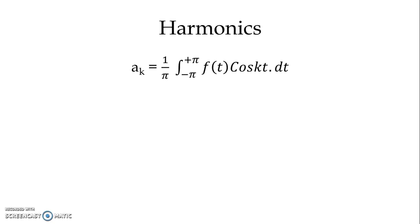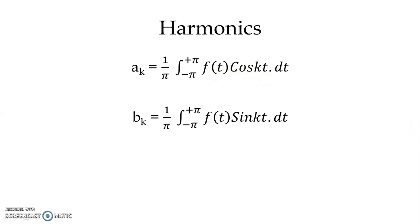We have the Fourier coefficients. For simplified calculation, the coefficient aₖ is equal to (1/π) times the integral from −π to +π of f(t) cos(kωt) dt. Similarly, the coefficient bₖ is equal to (1/π) times the integral from −π to +π of f(t) sin(kωt) dt.